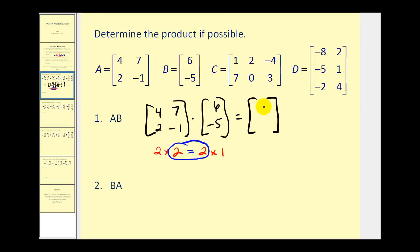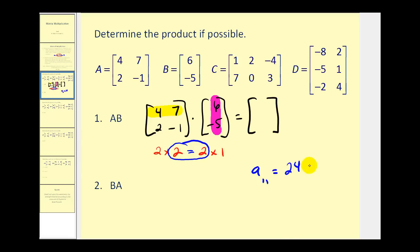Now let's determine the elements in this product. This element is in row one, column one. So to determine it, we're going to multiply row one in the first matrix by column one in the second matrix — the first element times the first, plus the second element times the second. So four times six is twenty-four, plus seven times negative five is negative thirty-five. The element in row one, column one is equal to negative eleven.